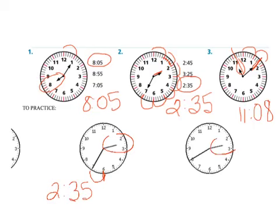Here again, it's between 2 and 3, so it's 2 something, and I'm going to count around by 5s. 5, 10, 15, 20, 25, 30, 35, 40, so it is 2:40.